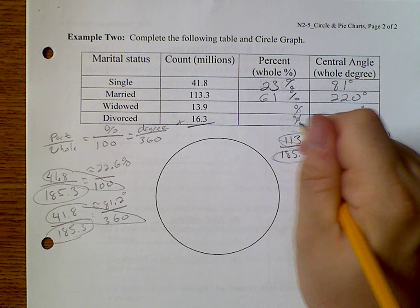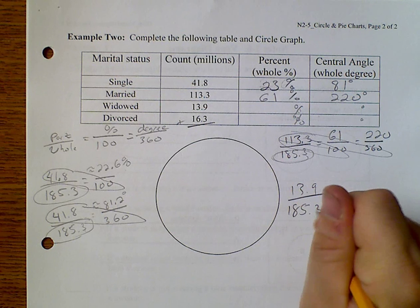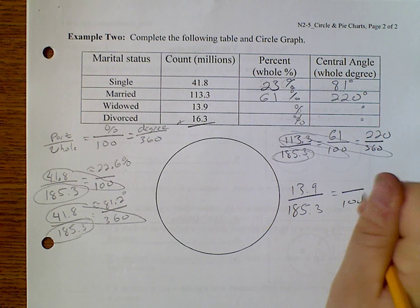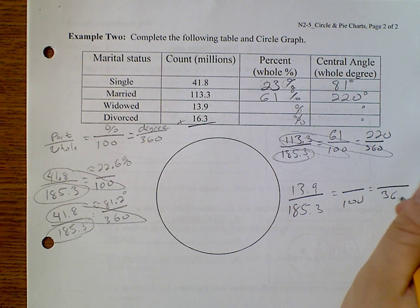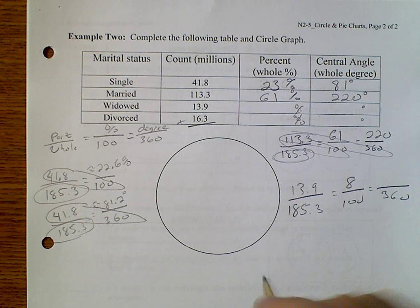13.9 over 185.3 that equals about 8. That equals 27.